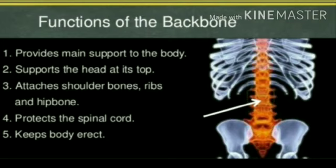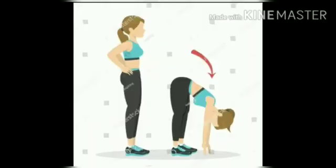The backbone also protects the spinal cord, which is present below our head. It supports the head at the top and it attaches the shoulder bones, ribs, and hip bone, making our body erect and giving it proper shape. It also helps in bending the body forward and backward, which would not have been possible without the backbone.